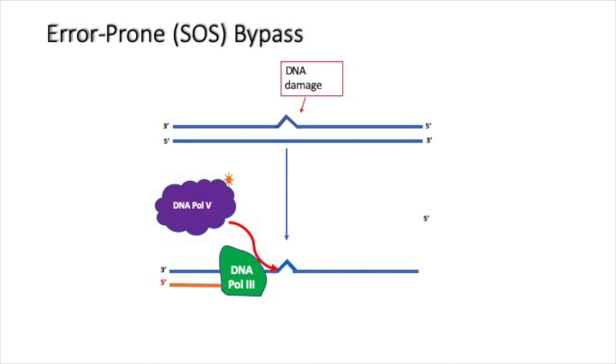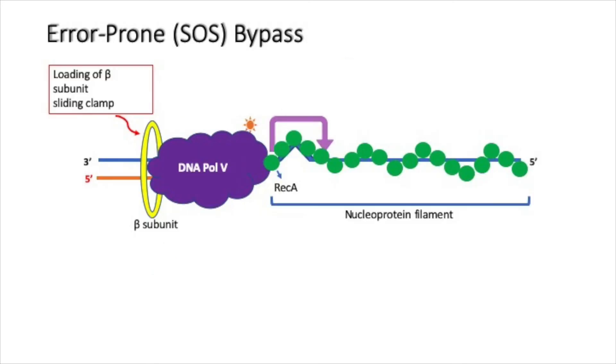DNA polymerase 5 has the ability to bypass DNA lesions. During this process, beta subunit of DNA polymerase 3 and RecA assist DNA polymerase 5.